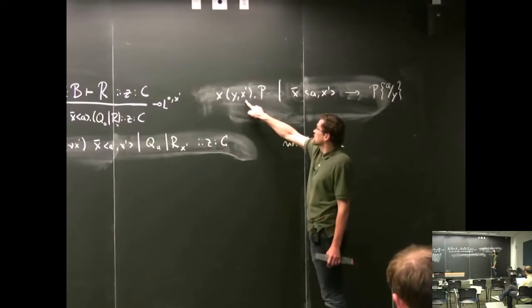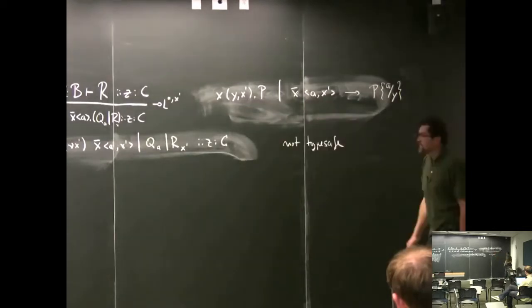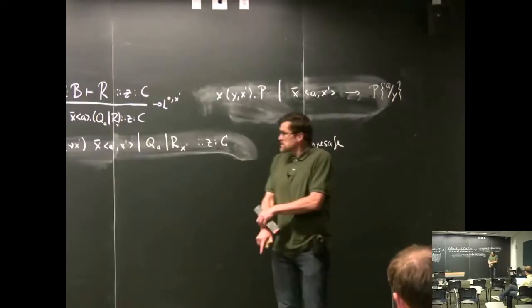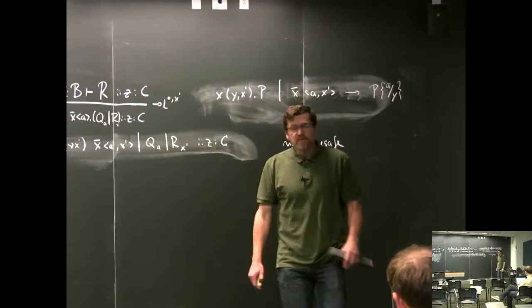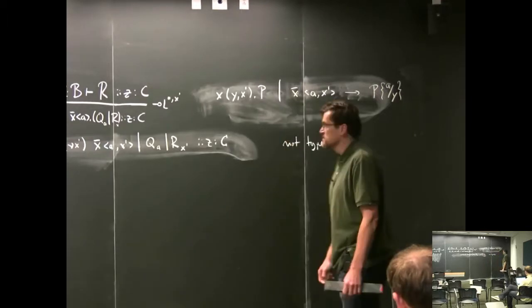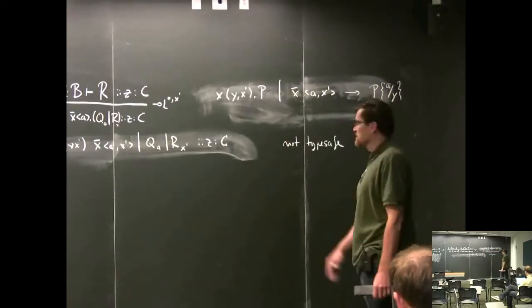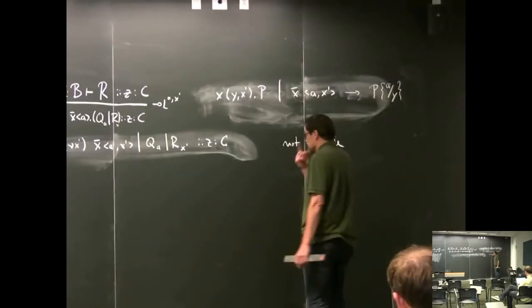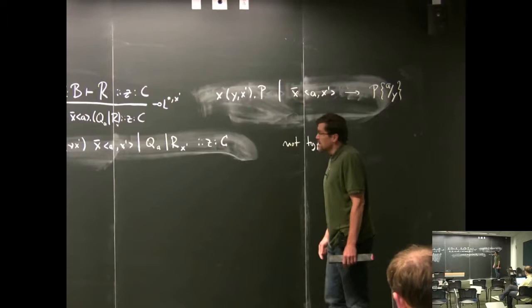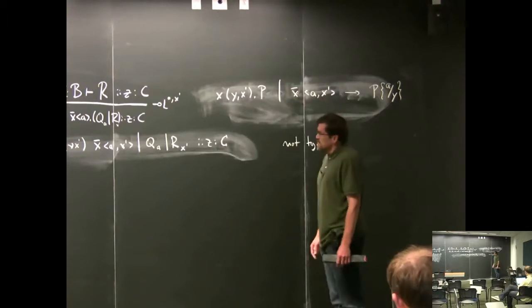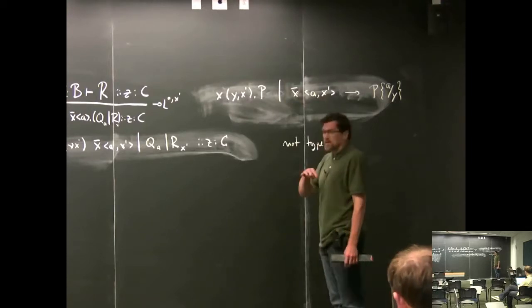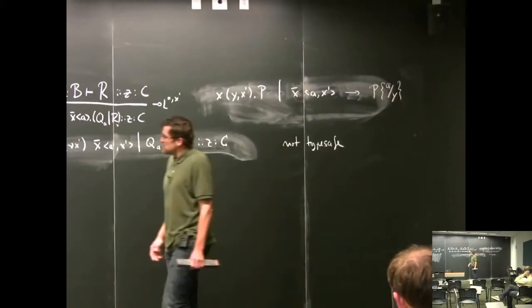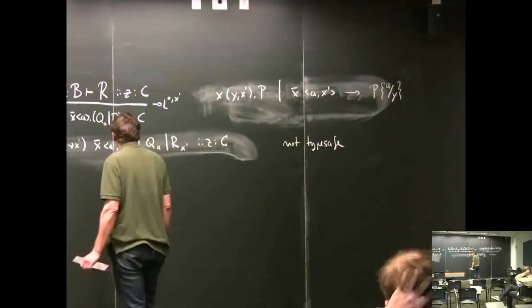Of course now we need to make sure that everything still works — that we have type preservation and that cut reduction simulates computation. I'm not going to go through all of this but you can see it in the paper. We can do at least one more example to give confidence it would actually work, so let's do the rules for tensor.